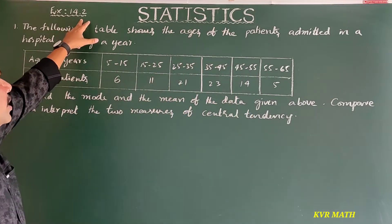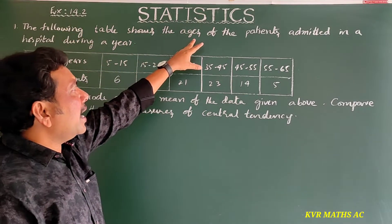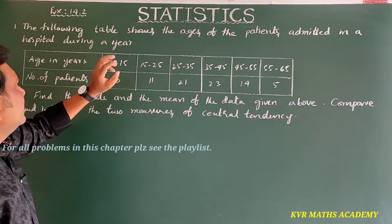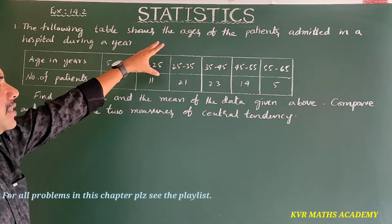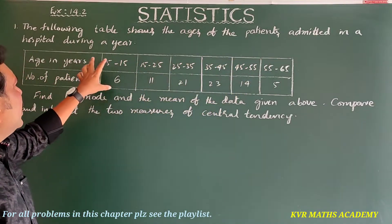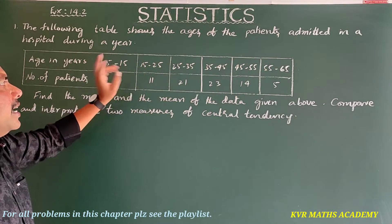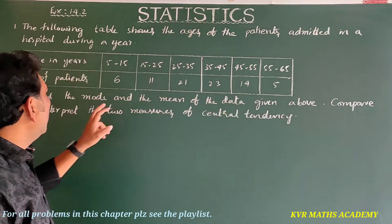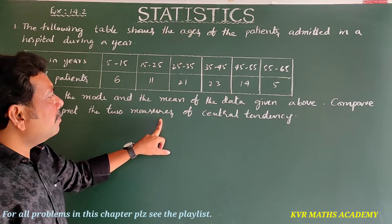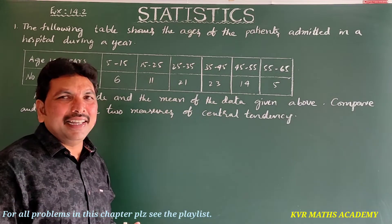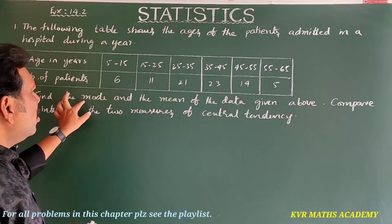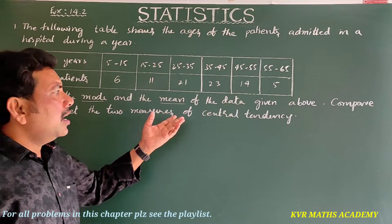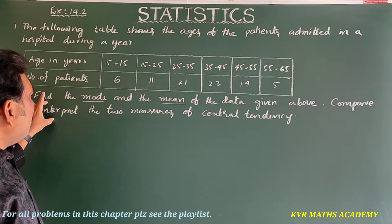The first problem in Exercise 14.2: the following table shows the ages of the patients admitted in a hospital during a year. We have to find the mode and mean of the data given above, and compare and interpret the two measures of central tendency.